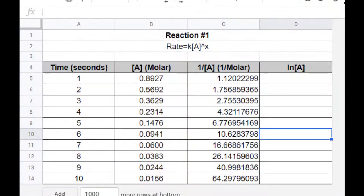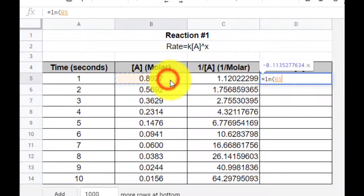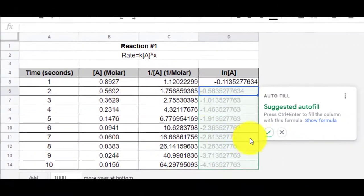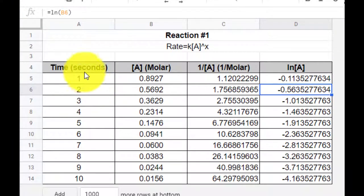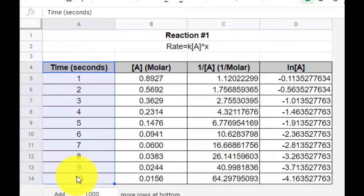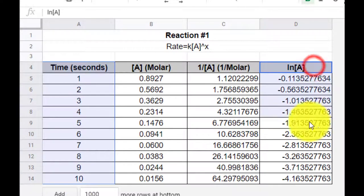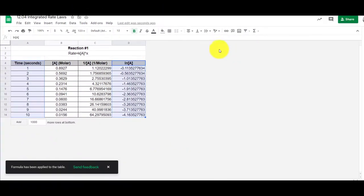So I'm hoping that this is a first order reaction. I want to find the natural log of concentration. So I can set this equal to the natural log of my concentration, so that's B5 again. Hit enter. They want to autofill these, which is great. And so now I can graph my natural log of concentration versus time and see what I get.